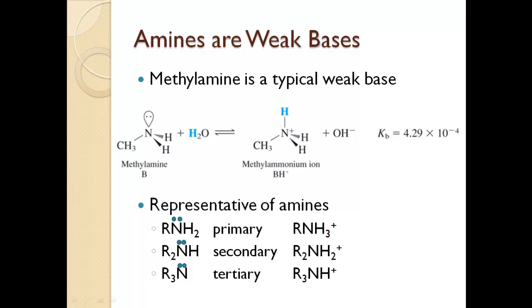Typical weak bases are amines. Methylamine is a classic example — it grabs a proton from water to become the methyl ammonium ion, and its base hydrolysis constant is given. Amines can be primary (RNH2, one R group attached to nitrogen), secondary (R2NH, two R groups), or tertiary (three R groups), each forming the corresponding ammonium ion.